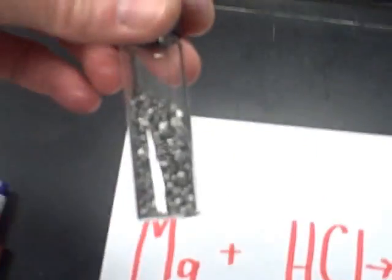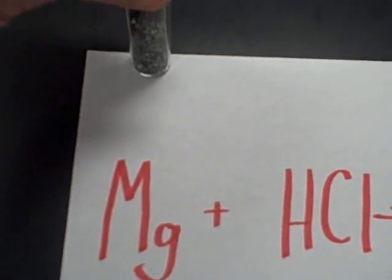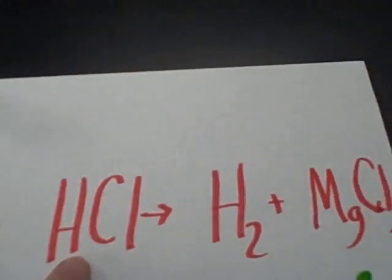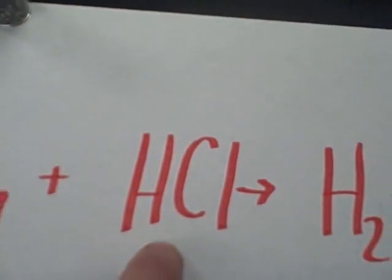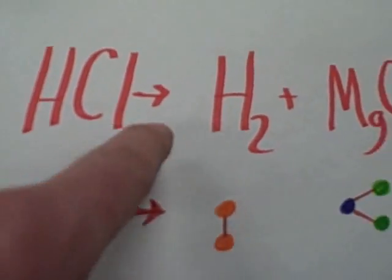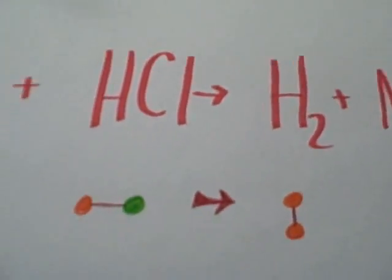Today we're going to be using a metallic element — this would be magnesium — and we're going to combine it with a solution, hydrochloric acid, which consists primarily of hydrogen and chlorine. They're going to undergo a chemical reaction.